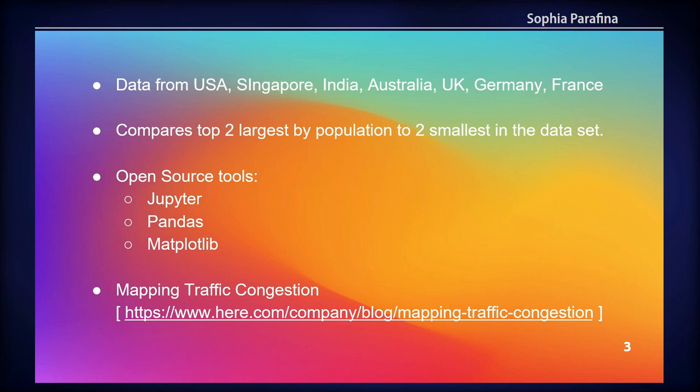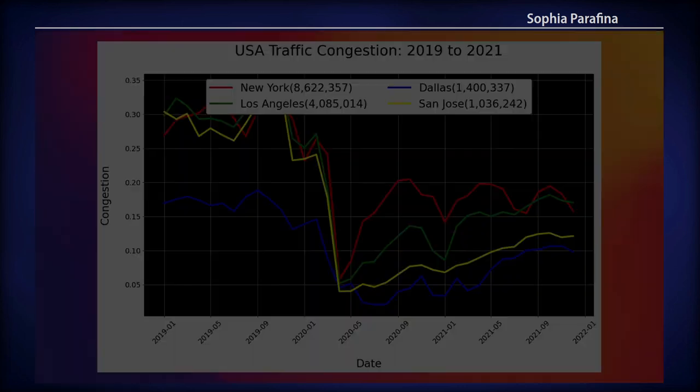Open source tools — typically Jupyter, Pandas, Mapplop, and Live. If you want to make maps, I actually wrote a whole blog post on how to map the traffic congestion there as well, and I'll have a URL where you can find all these articles I've written.